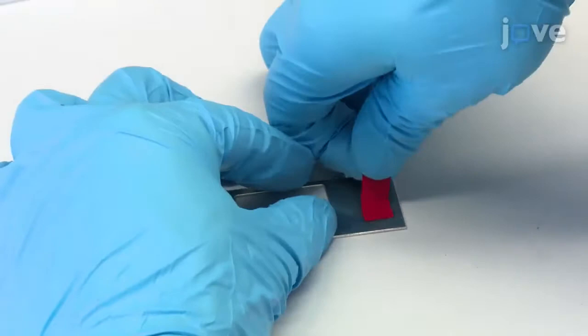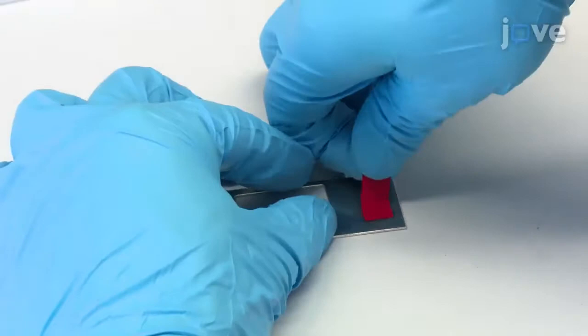Next place a sterile glass cover slip on a plastic or metal frame that has a hole in the middle. Then use tape to fix the cover slip to the frame.